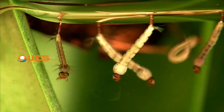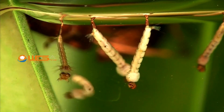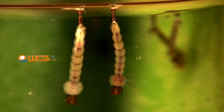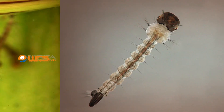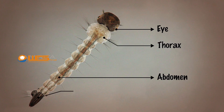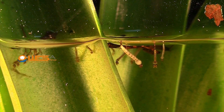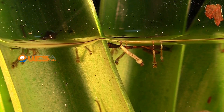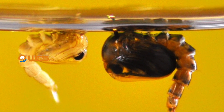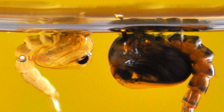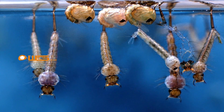They spend most of their time hanging upside down at the surface, sucking in oxygen through the siphon. The siphon is located at the base of their abdomen and is similar to a snorkel. The larval stage lasts for a few days to a few weeks, during which the larvae shed several layers of their outer skin, called molting.